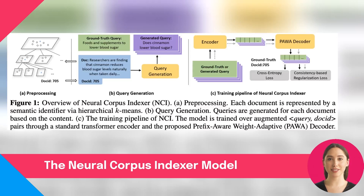First, Query Generation. This is a technique that augments the data for training. Basically, it creates a query from the document, which helps the model to better understand and identify the document. It is implemented by a sequence-to-sequence transformer model that takes as input the document terms and produces a query as output.